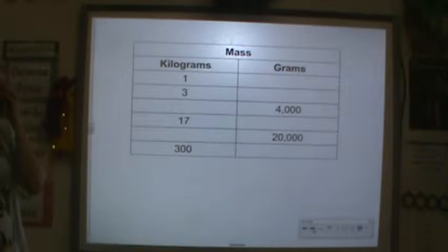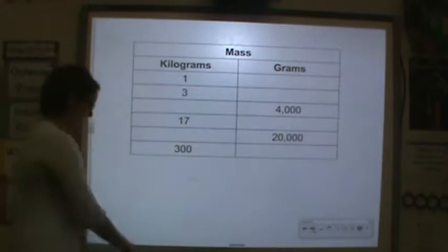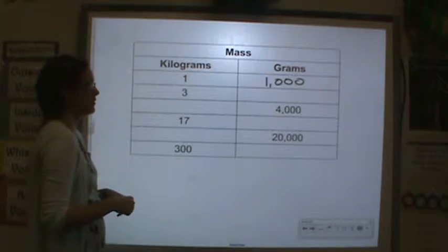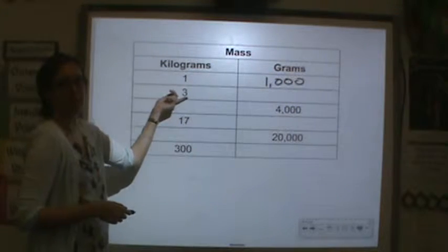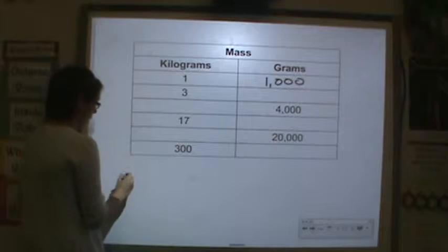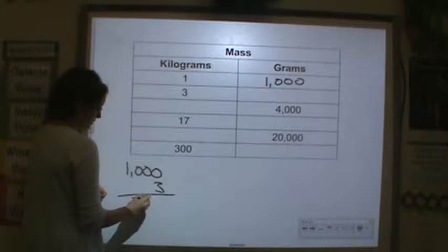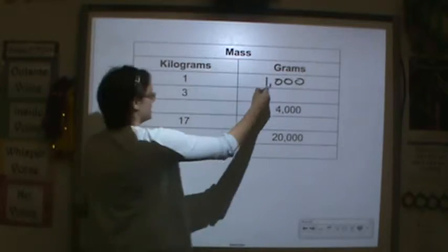So let's fill in this chart. I know that there are 1,000 grams in a kilogram. So what if I had 3 kilograms? I would do 1,000 and I have 3 equal groups of 1,000. So you have 3,000.